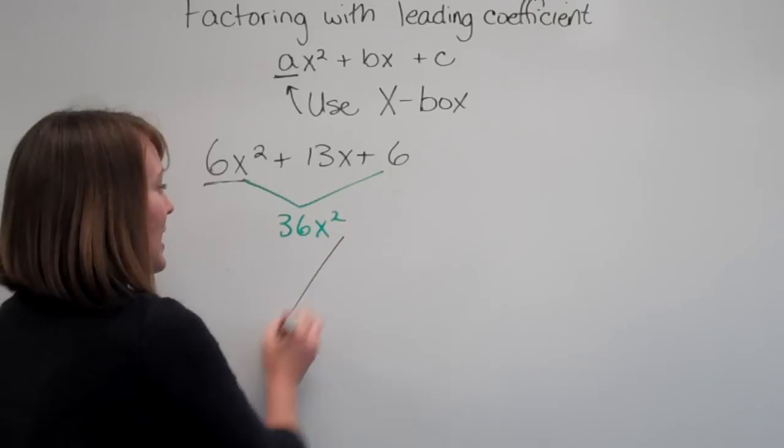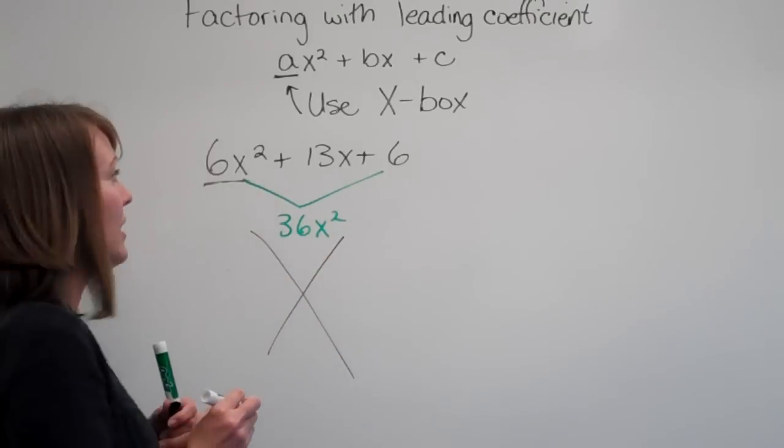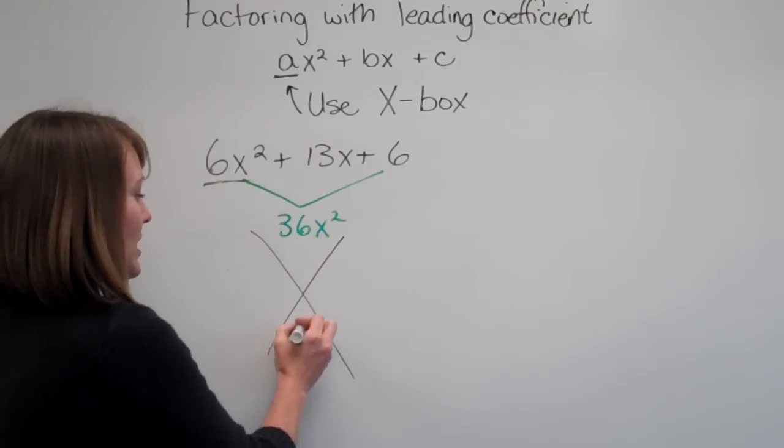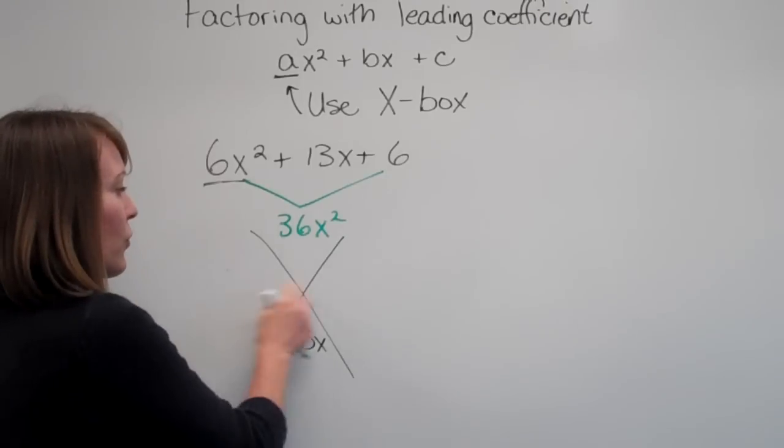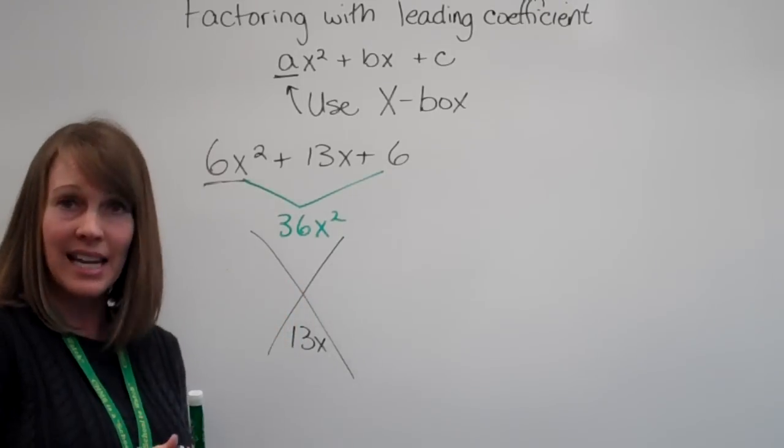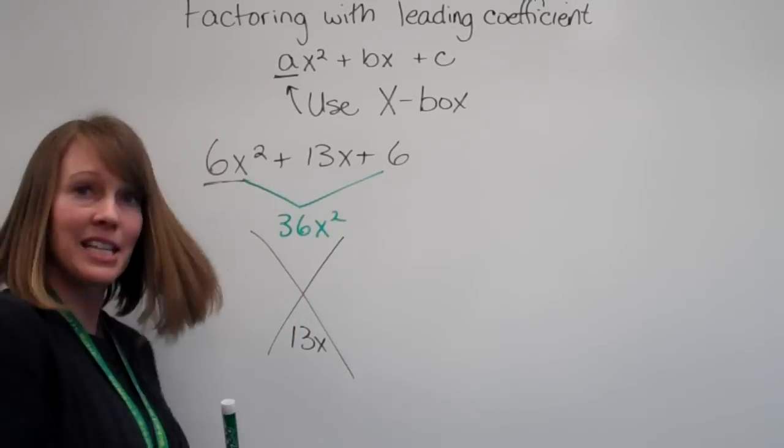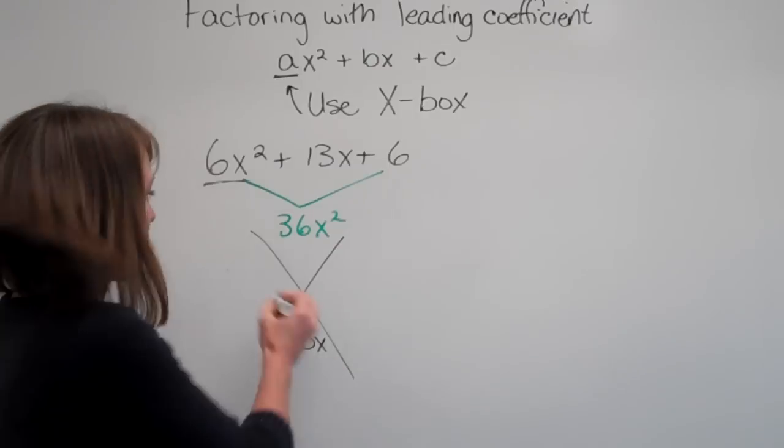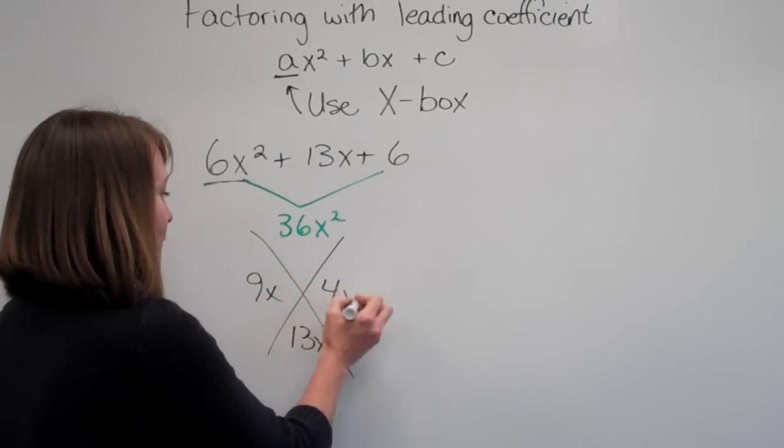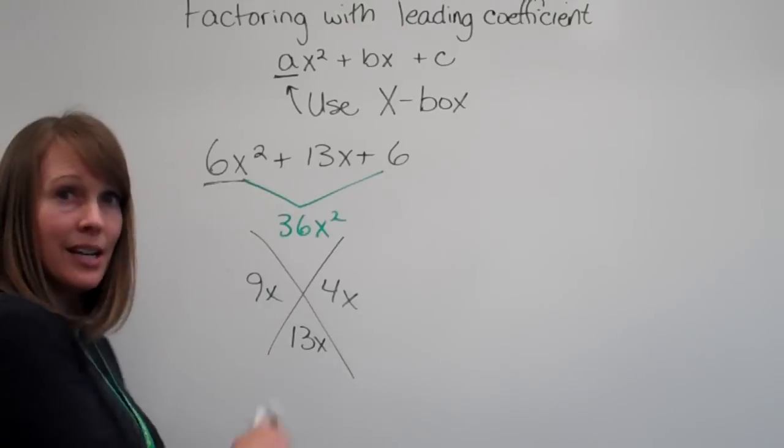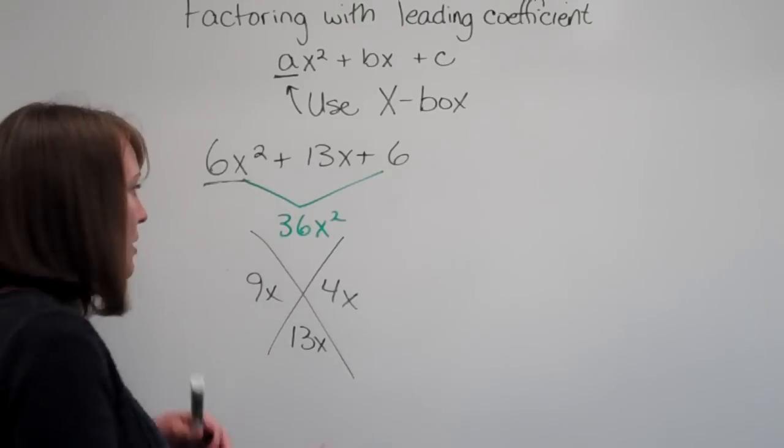This is just so that we can get our new factors. So we still have 13 here in the bottom, 13x. We're looking for new factors that multiply to get 36 and add to get 13. Oh, that's right, 9x and 4x. Multiply to get 36, add to get 13. Beautiful.